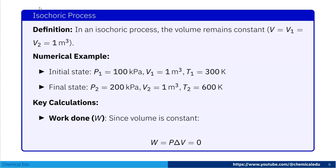Now I'll work through a numerical example. In an isochoric process the volume remains constant, so V equals V1 equals V2 equals 1 cubic meter. The initial state is P1 equals 100 kilopascal, V1 equals 1 cubic meter, T1 equals 300 Kelvin. The final state is P2 equals 200 kilopascal, V2 equals 1 cubic meter, T2 equals 600 Kelvin. Since delta V is zero, work done W equals zero.